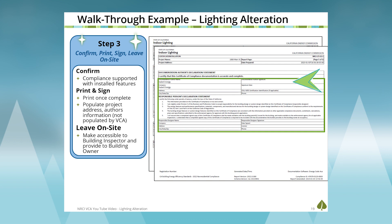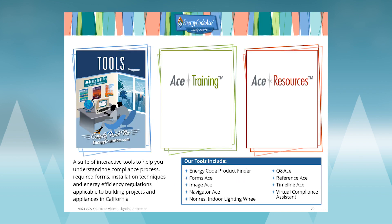Once all signatures are collected, leave the form on site for the building inspector before final inspection, or submit it through the jurisdiction's online system such as San Francisco DBI. Also make sure it's made available on site for the building owner.